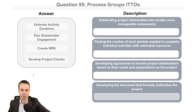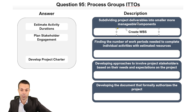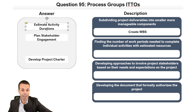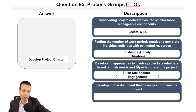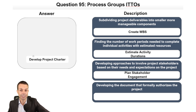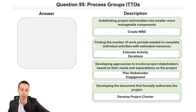More ITTOs: subdividing project deliverables into smaller, more manageable components is creating the work breakdown structure. Finding the number of work periods needed to complete individual activities is estimating activity durations. Developing approaches to involve stakeholders based on their needs is planning stakeholder engagement. And developing the document that formally authorizes our project is the project charter.